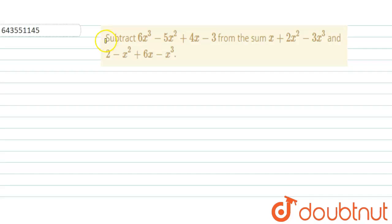Hello students, let us begin with the question. So the question says subtract 6x³ - 5x² + 4x - 3 from the sum of x + 2x² - 3x³ and 2 - x² + 6x - x³.